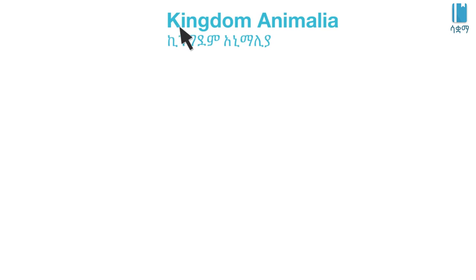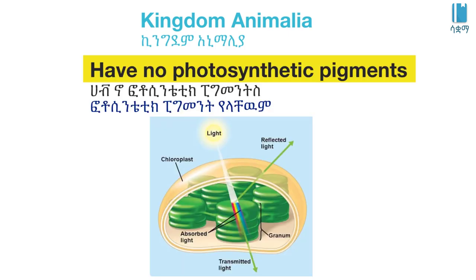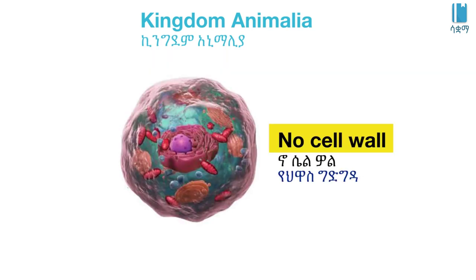In the animal kingdom, animals are eukaryotic — they have a true nucleus and membrane-bounded organelles. They are unable to carry out photosynthesis and lack photosynthetic pigments.